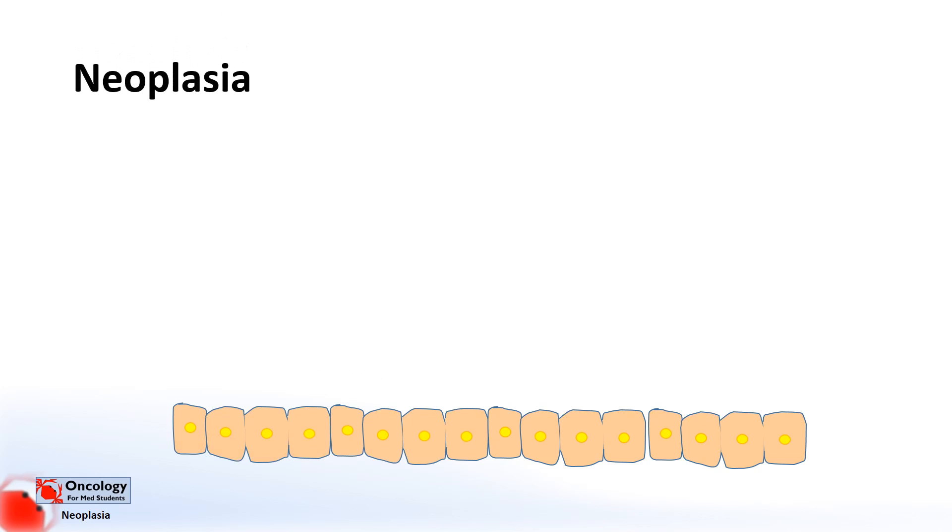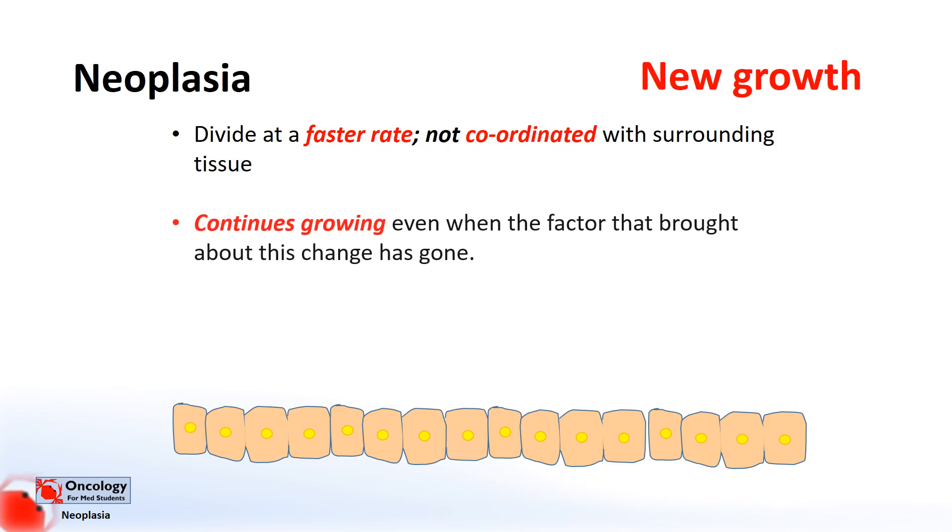So what is neoplasia? Neoplasia means new growth. A neoplasm or new growth appears when damage occurs to a cell that allows it to divide regardless of whether it's being told to by other cells. Neoplasms divide at a faster rate and in a way that is not coordinated with surrounding tissue. They continue to grow even when the factor that brought about the change has gone.